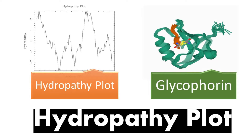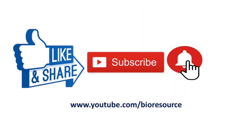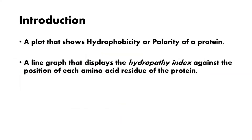Welcome back to my channel. Today we're going to see the hydropathy plot. A hydropathy plot is a plot that shows the hydrophobicity or polarity of a protein — a line graph that displays the hydropathy index against the position of each amino acid residue of the protein.